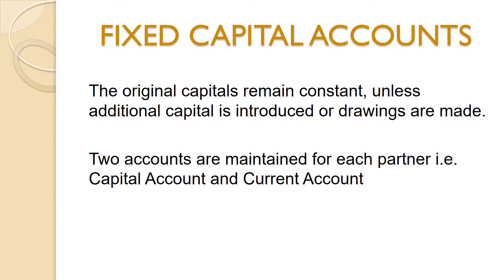Fixed capital account: the original capital remains constant unless additional capital is introduced or drawings are made. That means the capitals of partners are not allowed to change during the lifetime of the business except in extraordinary circumstances. When the fixed capital method is adopted, all entries relating to drawings against profit, interest allowed on capitals, interest charged on drawings, salary to partners, share of profit or loss, etc. are made in a newly opened account for each partner. This account is called the current account or drawing account. In total, two accounts are maintained for each partner — one is the capital account and the next is the current account.